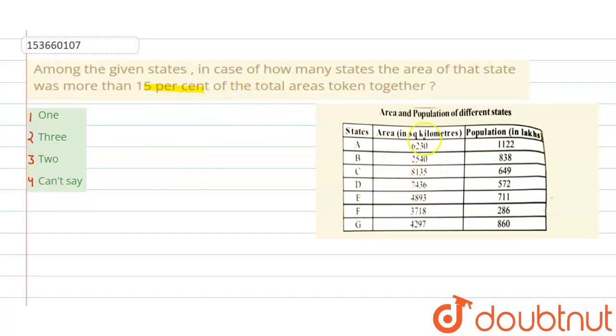So, a table is given. These are states A, B, C, D, E, and G. These are the area of total states and their population, respectively. This is the table.